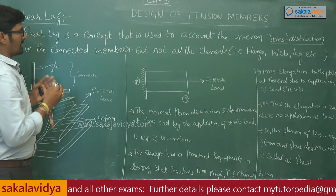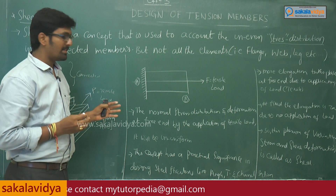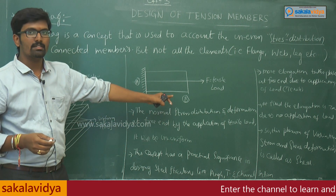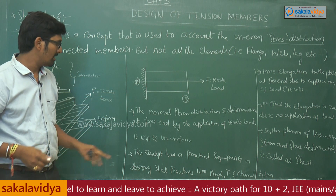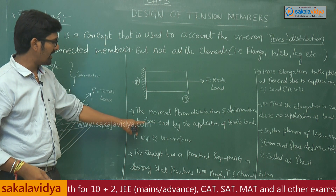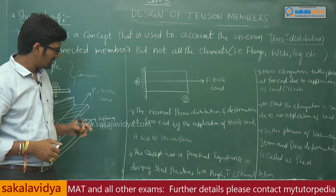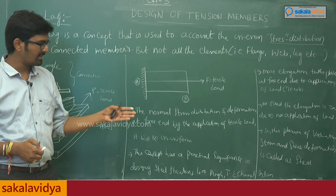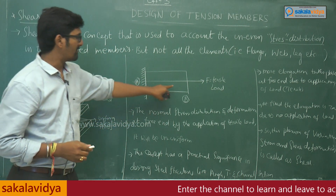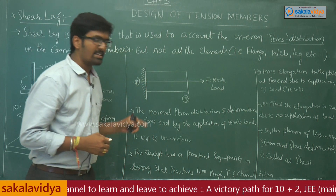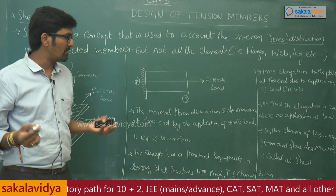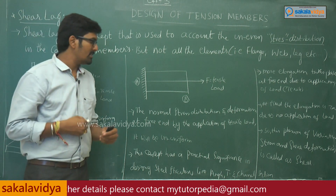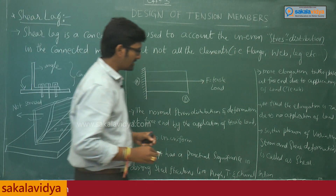To summarize: we assumed a flat rectangular plate fixed at one end and free at the other. A tensile load acts at the free end and no load acts at the fixed end. The normal stress distribution and deformation at the free end is non-uniform. More elongation takes place at the free end; at the fixed end there is no elongation. This variation of stress and shear deformation is called shear lag.